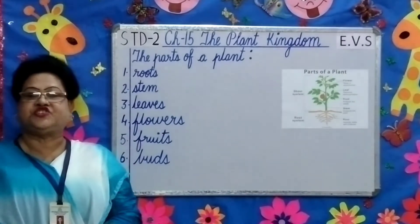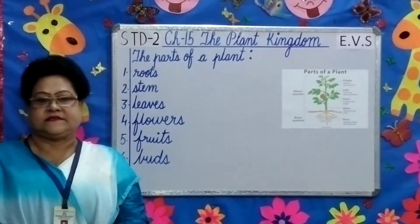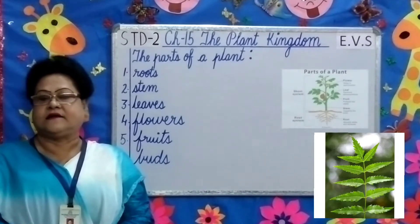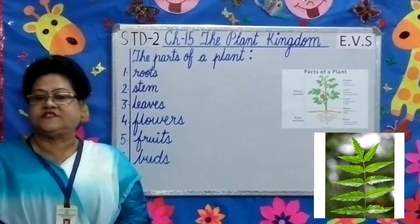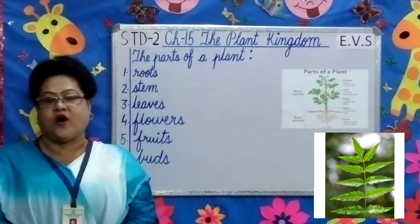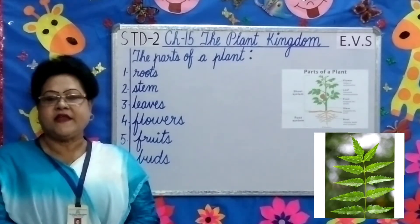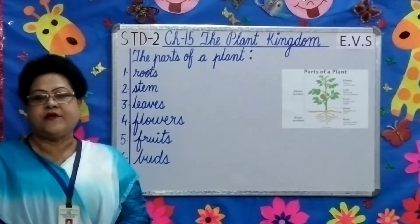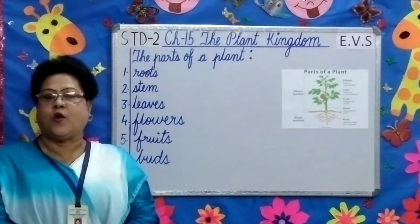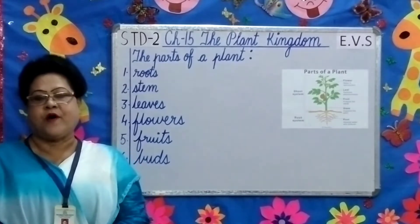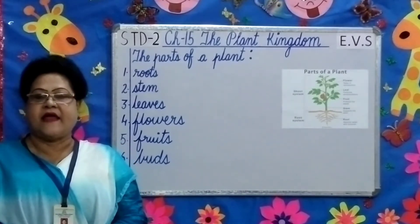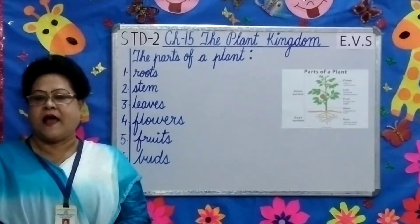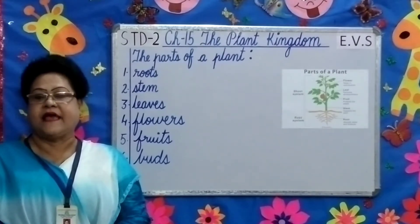The buds change into flowers. Plants generally have green colored leaves. This is due to the presence of a green colored substance called chlorophyll. Green plants prepare their own food with the help of sunlight, air, and water. Non-green plants cannot make their food.